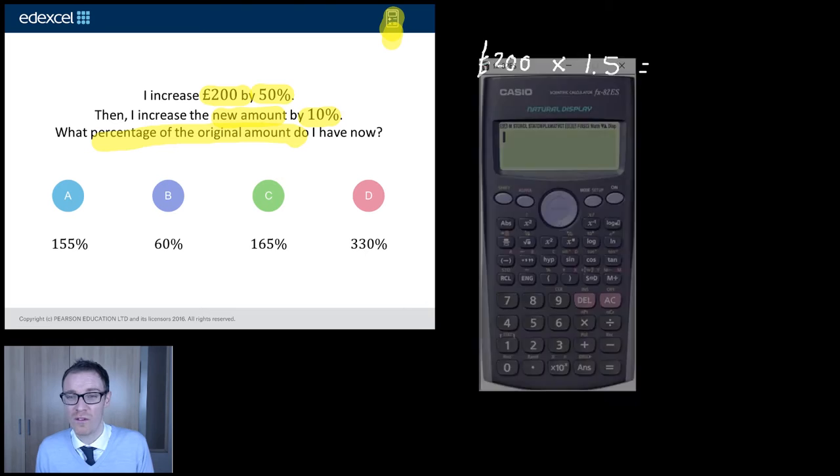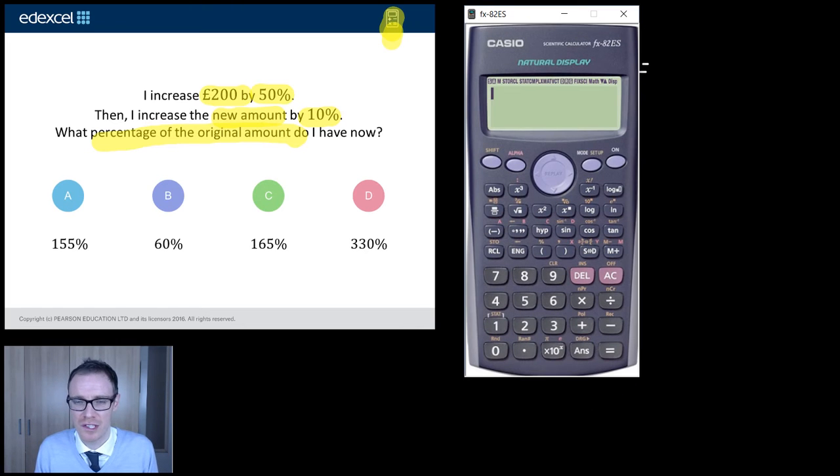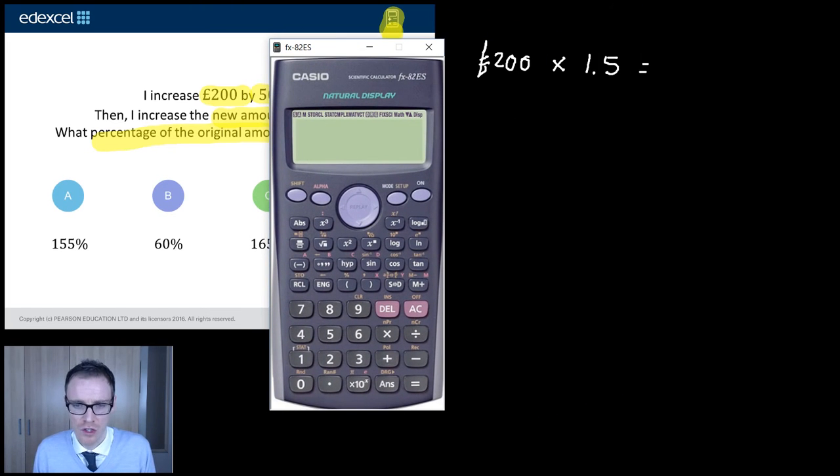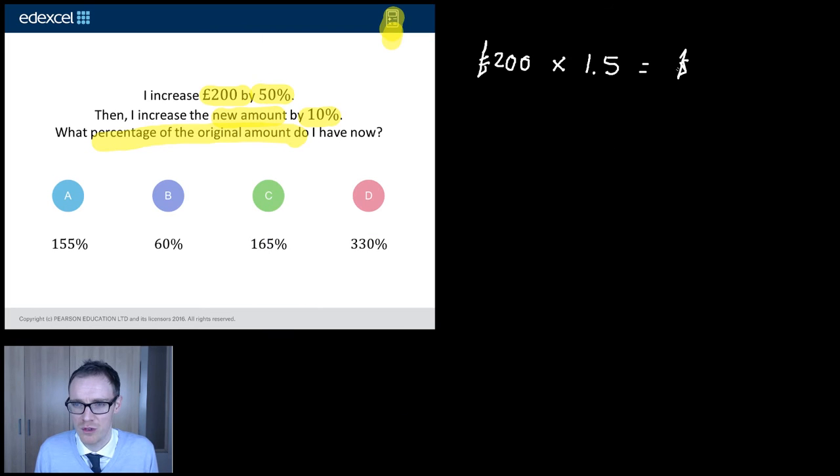Now, hopefully you know the answer to that, but let's just treat ourselves to working this out. So here it goes, 200 times it by 1.5. Can you guess what it's going to be before I press equals? Bit of drama, here it comes, 300. So that's going to be £300. Dodgy pound sign, but there we go.